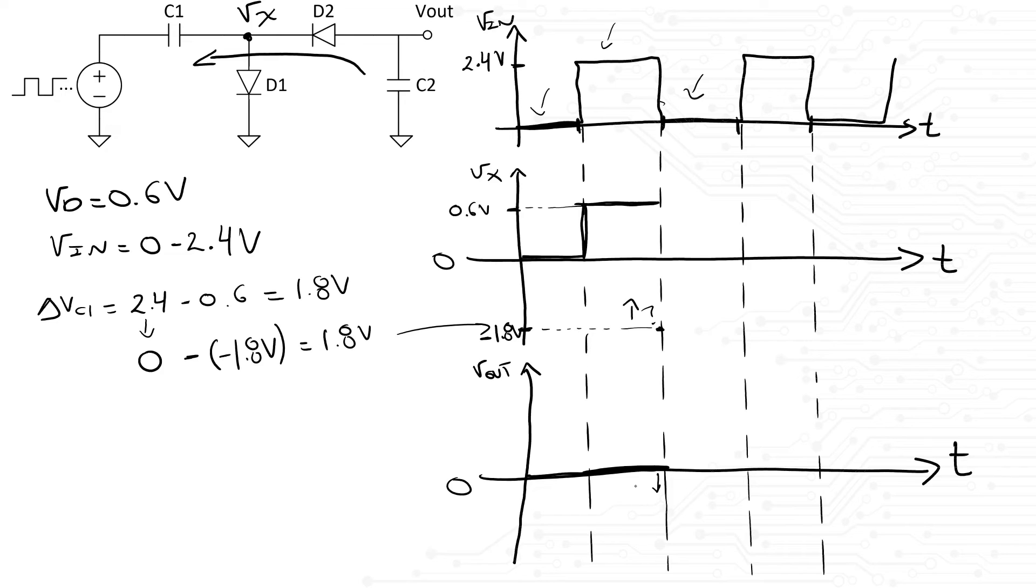A caveat here is that, since every component is assumed to be ideal, everything we just described happens instantaneously. So at the end of the cycle, Vout will become negative 0.6 volts and Vx will be negative 1.2 volts.